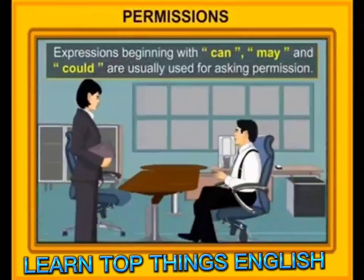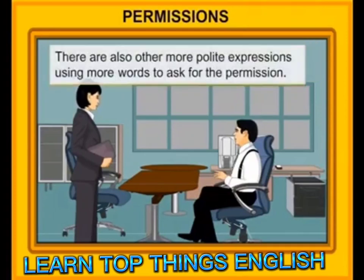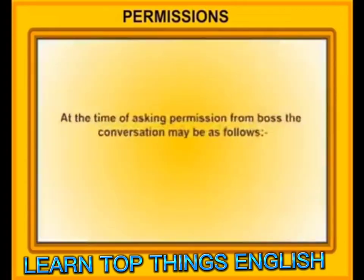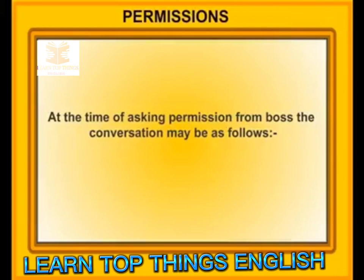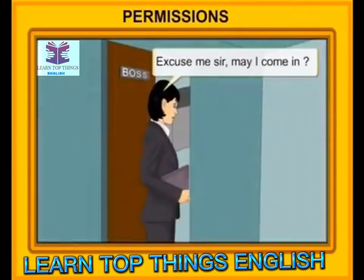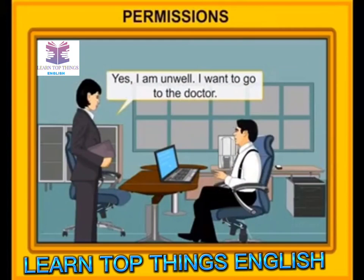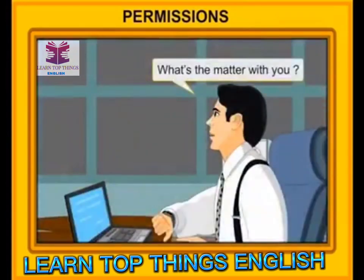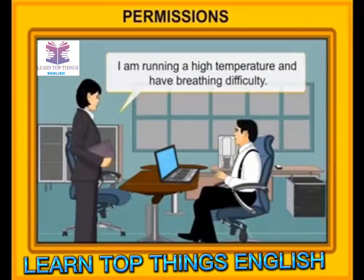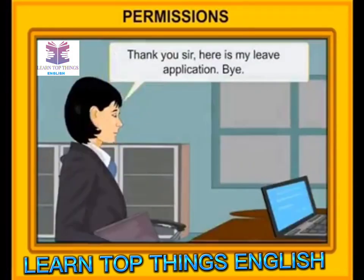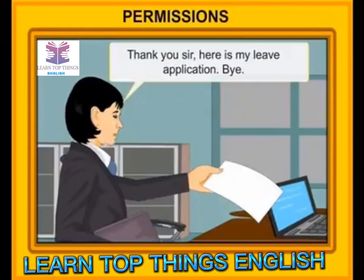Permissions. Expressions beginning with can, may, and could are usually used for asking permission. There are also more polite expressions using more words to ask for permission. At the time of asking permission from a boss: Excuse me, sir. May I come in? Of course. How can I help you? Yes, I am unwell. I want to go to the doctor. What's the matter with you? I am running a high temperature and have breathing difficulty. Well, you may go now and get well soon. Thank you, sir. Here is my leave application. Bye. Bye. Take care.